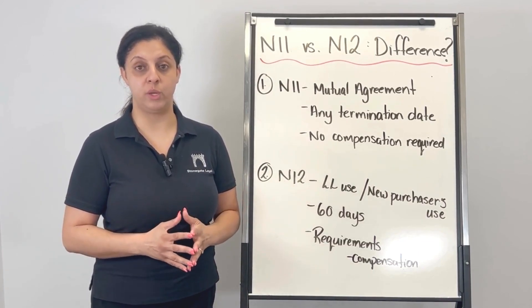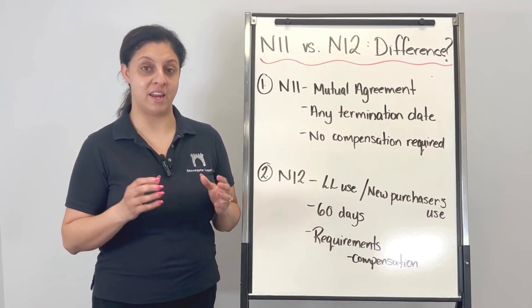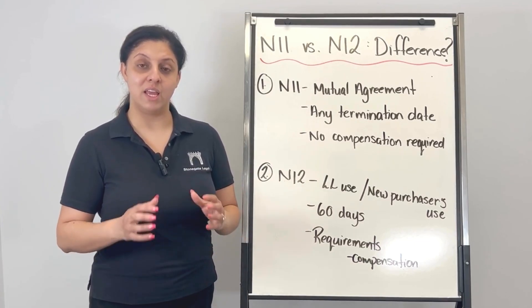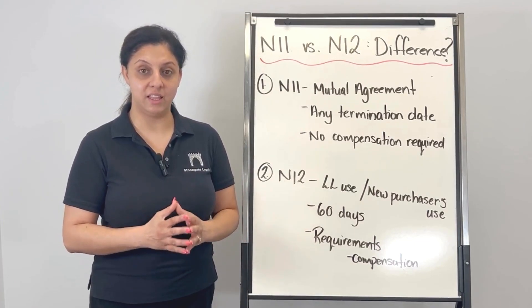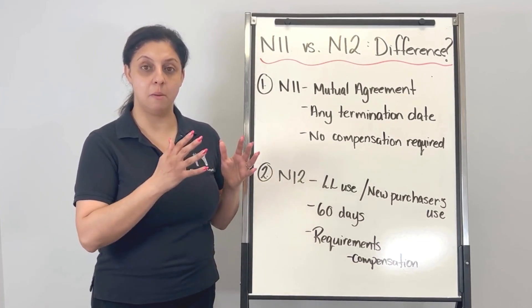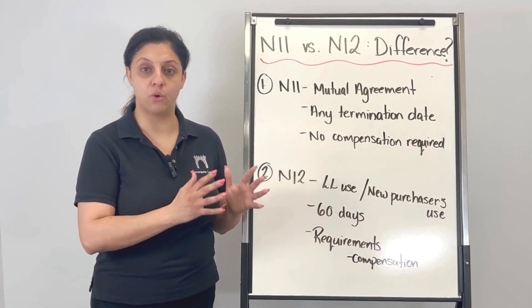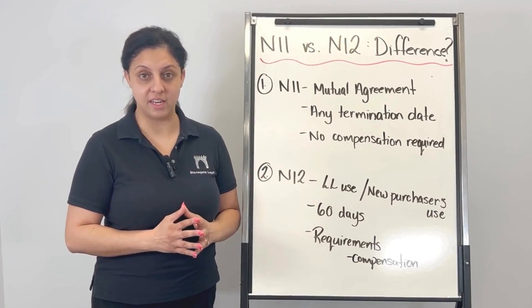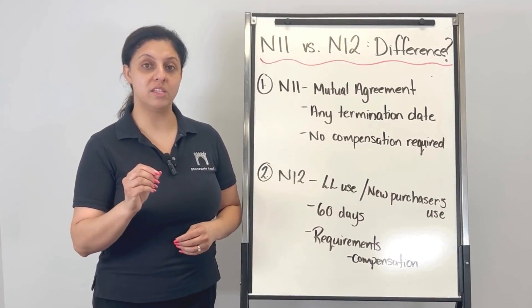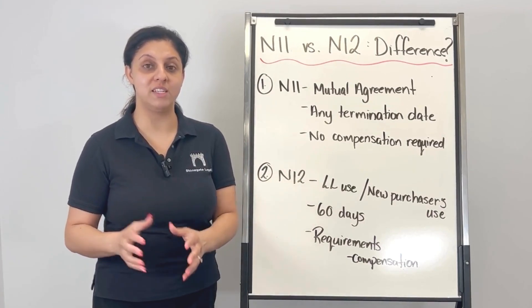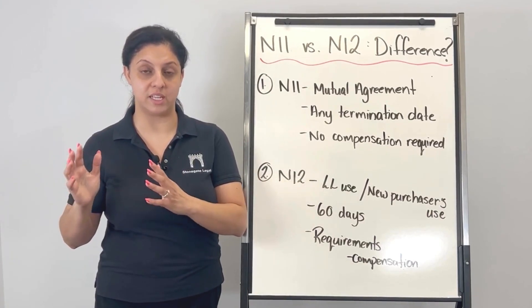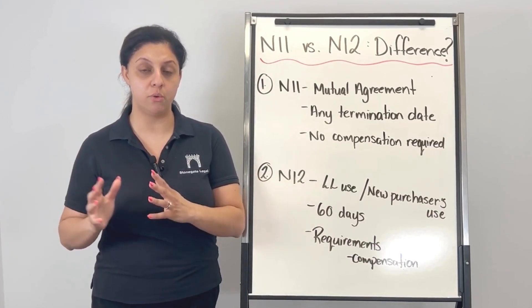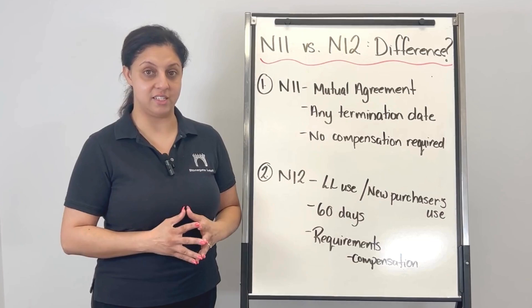So the difference between an N11 and an N12 is that an N11 is a mutual agreement to end the tenancy, whereas the N12 is a notice — a landlord's notice to end the tenancy.